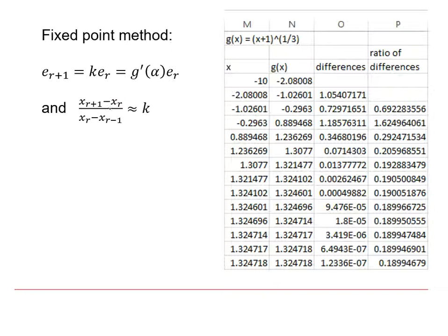Now we saw in the previous video that we can find an approximate value for k by working out the ratio of differences, and what this would mean in practice would be that we'd have to do a number of iterations until the ratio of differences settle down to a reasonably constant value.